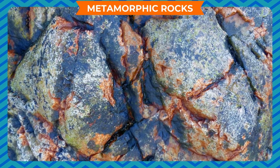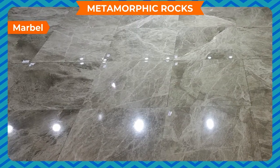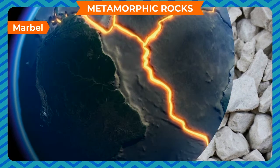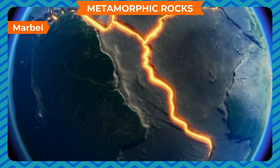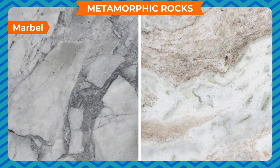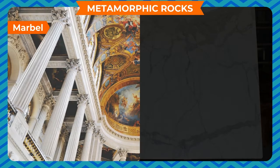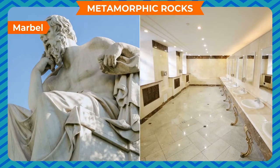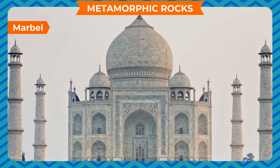Metamorphic rocks are mainly categorized into four types. Marble is a metamorphic form of the sedimentary rock limestone. It is formed when limestone is exposed to high heat and pressure inside the Earth's crust. It is found in different colors, and when polished it looks smooth and shiny. It is mainly used in buildings as flooring material and widely used for making statues. The famous Taj Mahal is built of white marble.